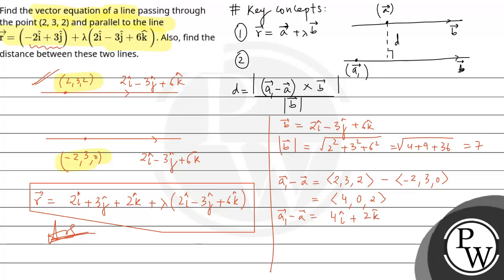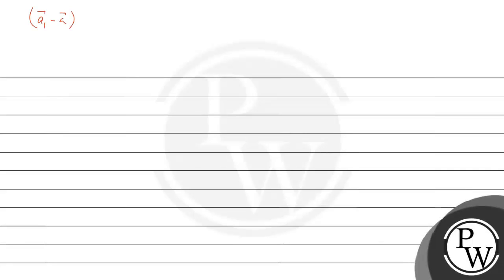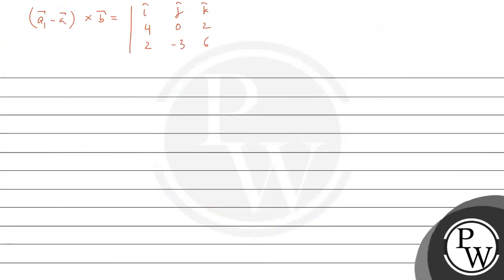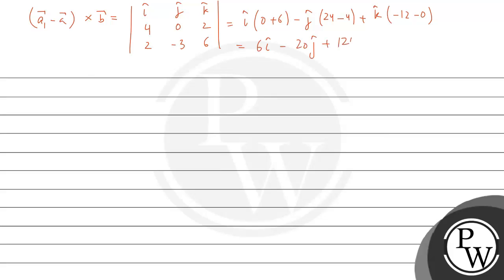Now let's find (a1 − a) cross b. The determinant is: i, j, k in the first row; 4, 0, 2 in the second row; 2, −3, 6 in the third row. This gives i(0×6 − 2×(−3)) − j(4×6 − 2×2) + k(4×(−3) − 0×2) = 6i − 20j − 12k.